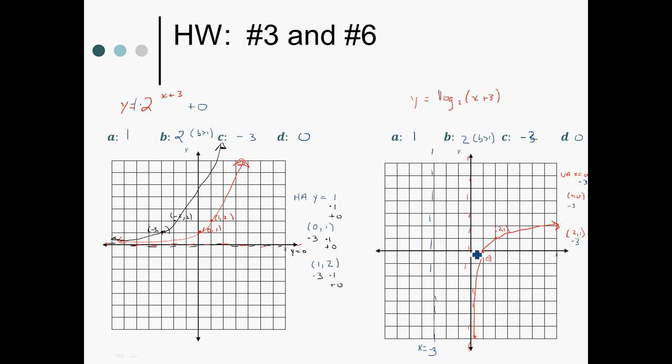So take this vertical asymptote and move it. Take the point one zero, move it. Take the point two one, move it. One, two, three. And draw the same shape. Rise quickly to the shifted x-intercept. Swoosh slowly. Okay?